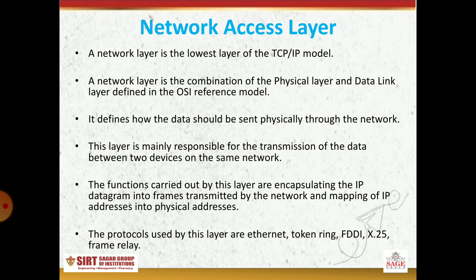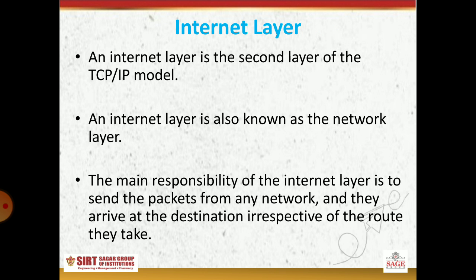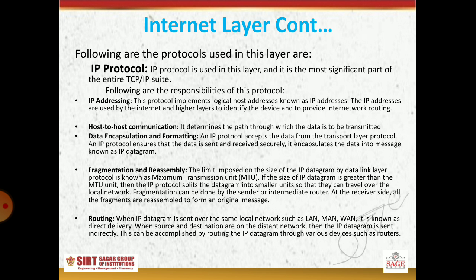The protocols used by this layer are Ethernet, Token Ring, FDDI, X.25, and frame relay. The next layer is the internet layer, which is the second layer of the TCP IP model. The internet layer is also known as the network layer. The main responsibility of the internet layer is to send packets from any network so that they arrive at the destination irrespective of the route they take. The following protocols are used in this layer, with IP protocol being the most important part of the entire TCP IP protocol.